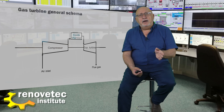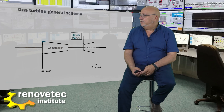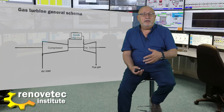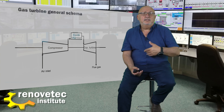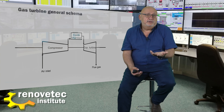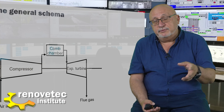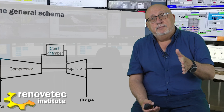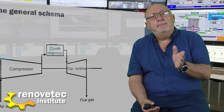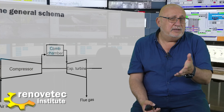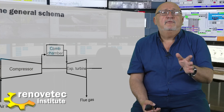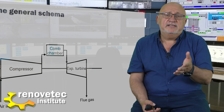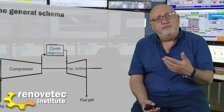The outlet of the expansion turbine is a flue gas. This flue gas has little or no pressure — very near ambient pressure — but the temperature is very high, normally around 500, 600, or even more degrees.